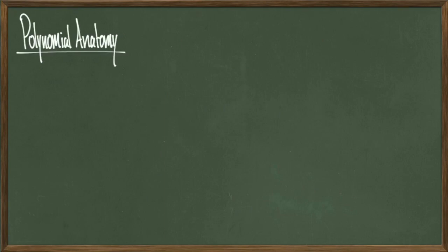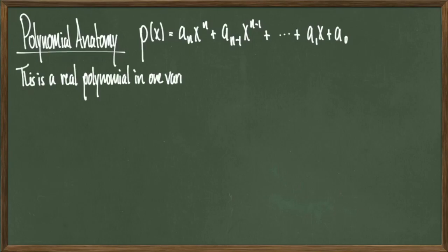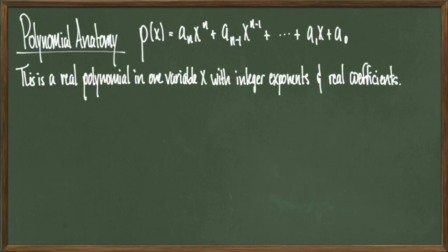Just as a refresher, we'll go over some basic polynomial anatomy. Let p be equal to the sum aₙ times xⁿ plus aₙ₋₁ times x to the n minus 1, all the way down to a₁ times x plus a₀. For the purposes of this video, all of these subscripted a's are assumed to be real numbers. So more precisely, this is a real polynomial in one variable x with integer exponents and real coefficients.